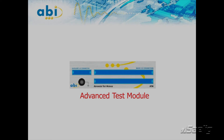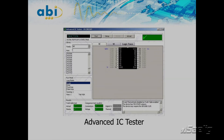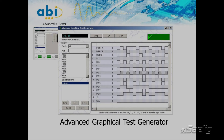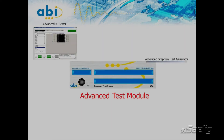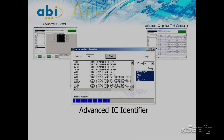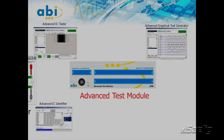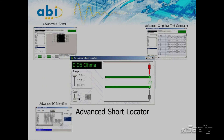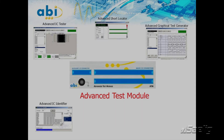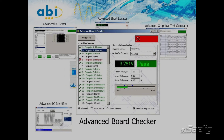With high specifications and up to 2048 channels, the module is ideal for both component and board level testing. The ATM offers five instruments: the advanced IC tester, a library-driven functional tester; the advanced graphical test generator for custom functional tests; the advanced IC identifier for unknown or house-coded ICs; the advanced short locator for close proximity detection of shorts; and the advanced board checker, used when flexible and custom tests with a high number of channels are required, useful for large connectors and production test environments.